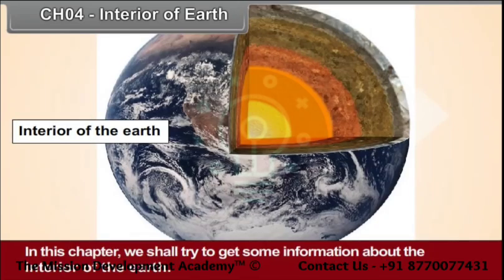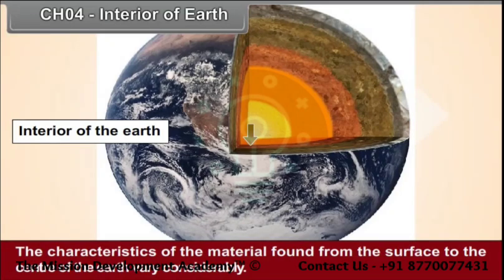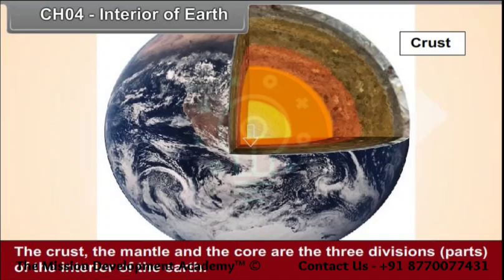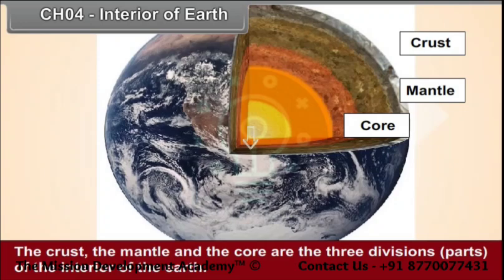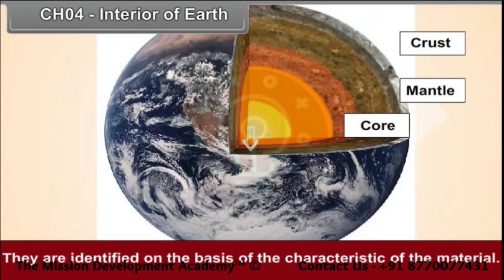In this chapter, we shall try to get some information about the interior of the earth. The characteristics of the materials found from the surface to the center of the earth vary considerably. The crust, the mantle, and the core are the three division parts of the interior of the earth. They are identified on the basis of the characteristics of the materials.